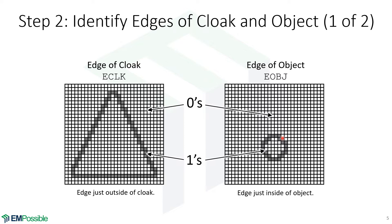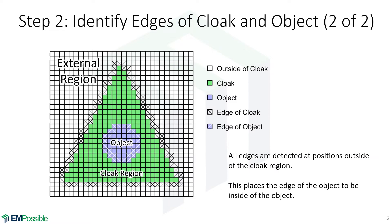The edge of the object has the edge placed inside the object. What we have is two edges that are outside where the actual cloak will be. To make this clearer: the green squares show where the cloak is, the blue square shows where the object is, and X's mark the identified boundaries. The boundary of the cloak is outside where the cloak is; the edge of the object is inside the object but outside the cloak. This green region is where we want to solve Laplace's equation, which is why we place these edges just outside of it.